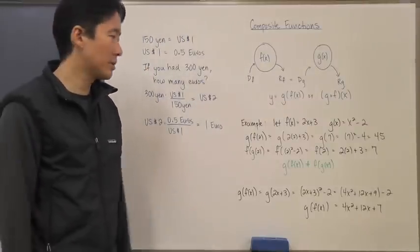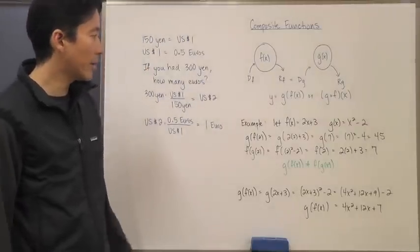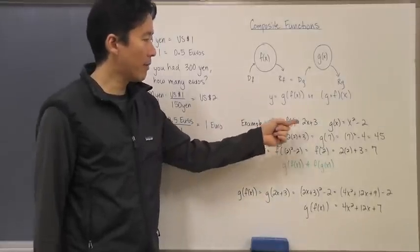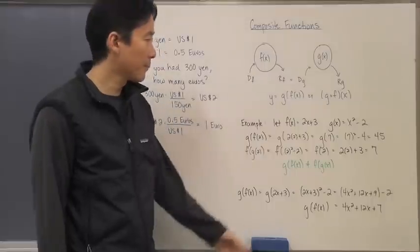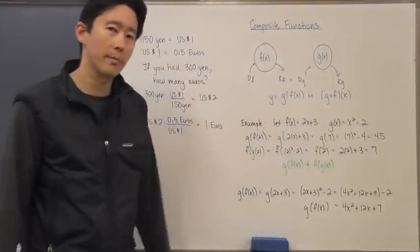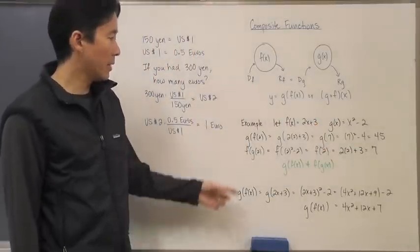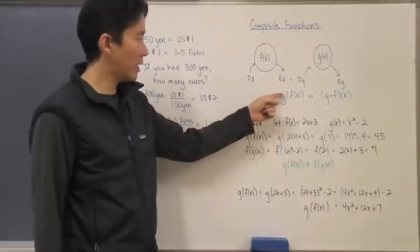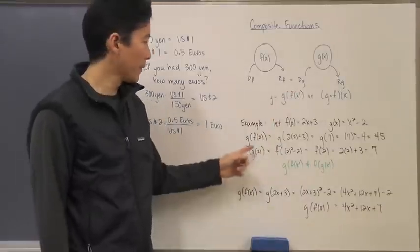Let's take a look at an example to put this into context with some of the more algebraic functions that we're going to deal with. Let's say for example that F(X) is equal to 2x plus 3, and G(X) is equal to x squared minus 2.